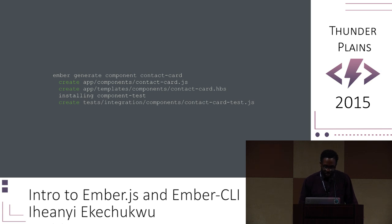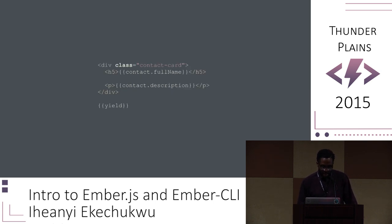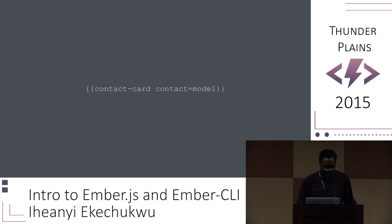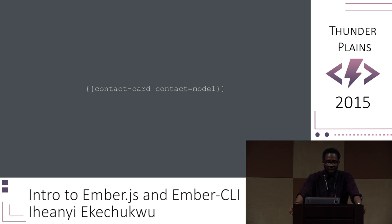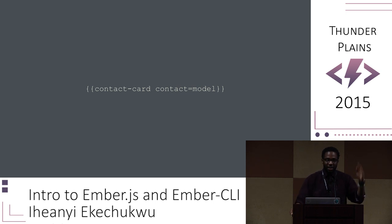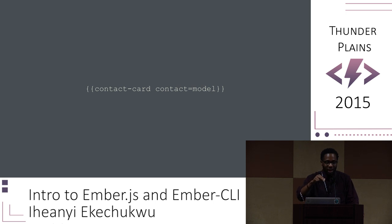I'm going to generate a simple contact card component to show how it works. The contact card component has a full name and description. So let's say we're using this component in the detail route's template — you pass the model into it and it renders the full name and description. The beauty is that if you wanted to reuse the same component in your sidebar, you can loop through every single contact, pass each contact to the contact card component, and it'll render the same output.